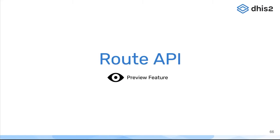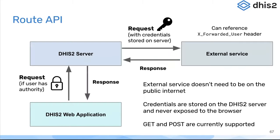The next preview feature I want to talk about is called the Route API. This is a very powerful functionality for application developers in particular. It's also available through the API, so it doesn't have to be a DHIS2 web application, but it's very powerful for a web application that is deployed through DHIS2. What it supports is being able to access an external service through the DHIS2 server API.